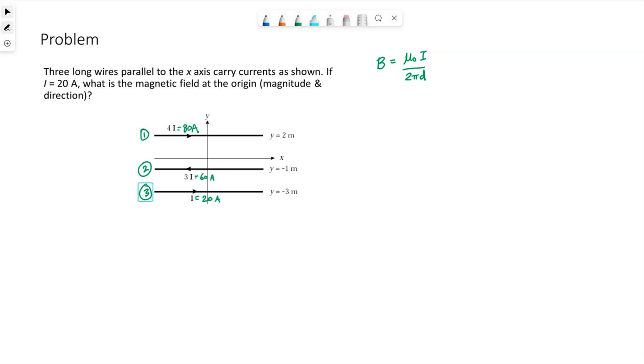So the overall magnetic field at the origin is simply going to be the magnetic field due to these three individual wires added together. Simply add them up. This equation gives us the magnitude only. It does not give us a direction.